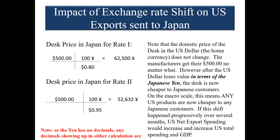At the old rate: $500.00 × (100 yen ÷ $0.80) = ¥62,500. Time passes and 100 yen is now worth $0.95 — the yen is worth more in terms of the dollar, or the dollar is worth less in terms of the yen. At the new rate: $500.00 × (100 yen ÷ $0.95) = ¥52,632. Notice the price of that desk drops by almost ¥900 — because the yen buys more dollars, it takes fewer yen to buy the desk.